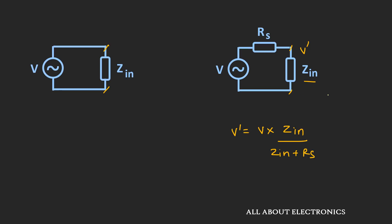This loading effect can be minimized by having a very large input impedance. For example, if the input impedance of the circuit is much larger than the series resistance, then V' will be approximately equal to the input voltage V. On the other hand, if the input impedance is comparable to the series resistance Rs, then V' will be less than the input voltage V. So for any circuit, the input impedance should be as high as possible, so that the entire voltage appears across the circuit.